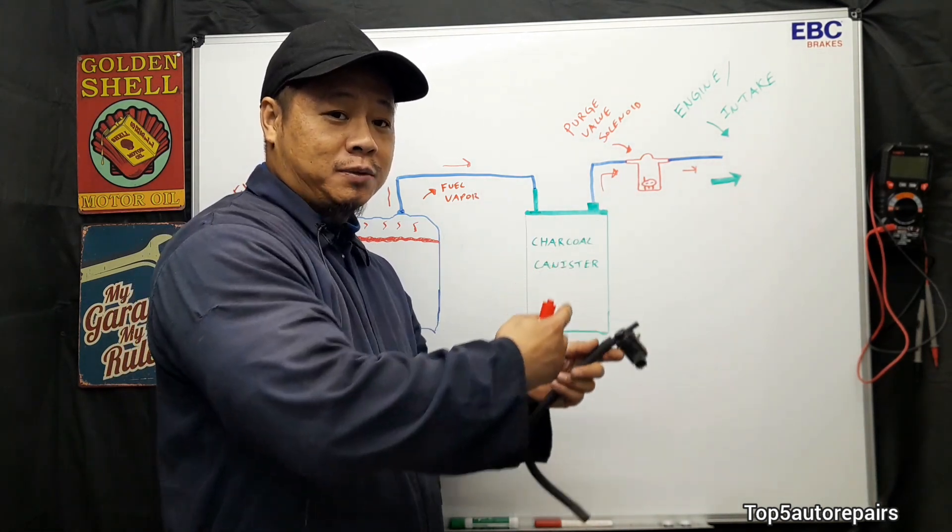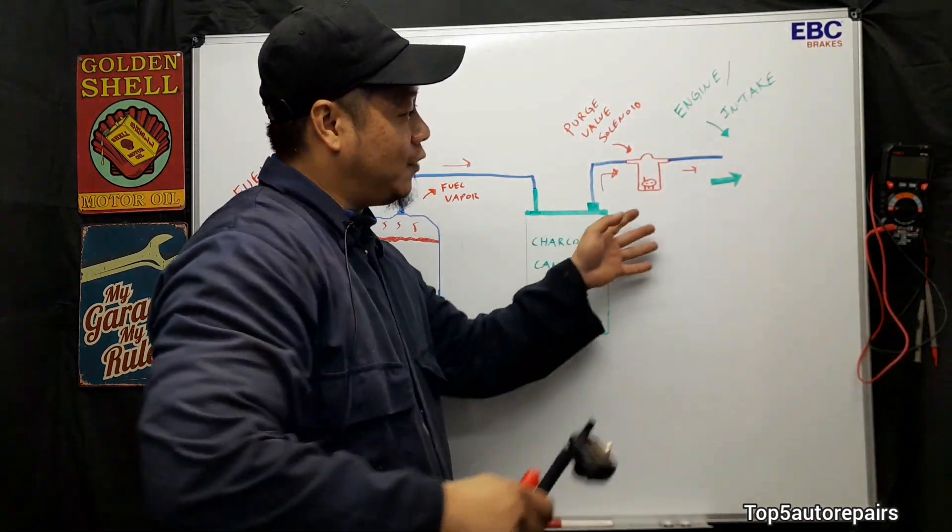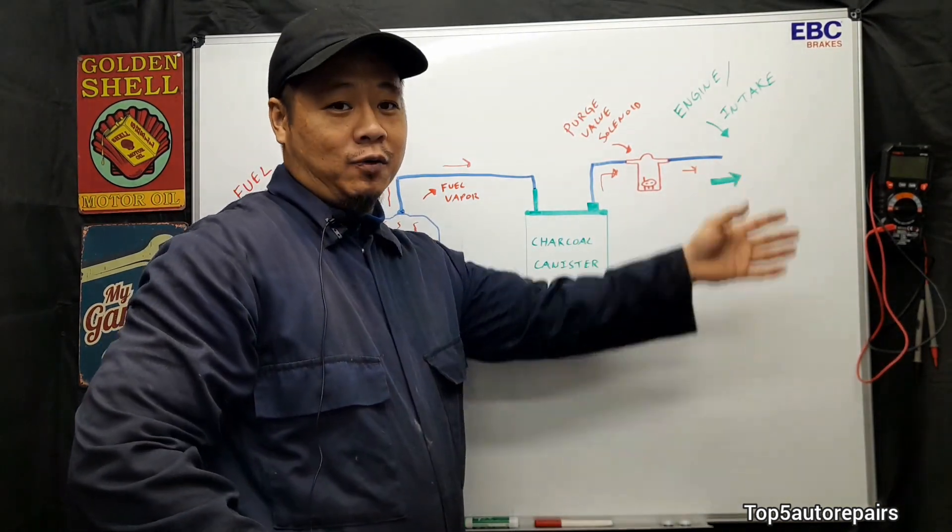So basically when it wants it to open up, it's going to energize the solenoid and cause it to open up and the fuel vapor is going to travel again to the intake where it will be burned again.